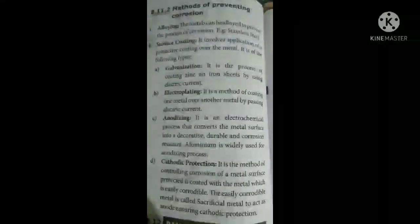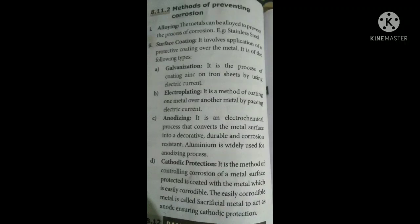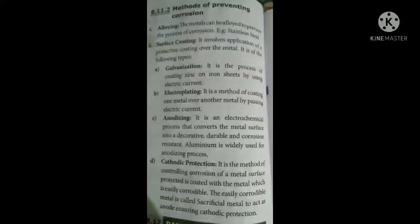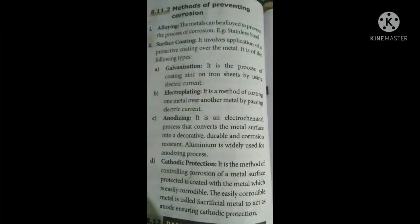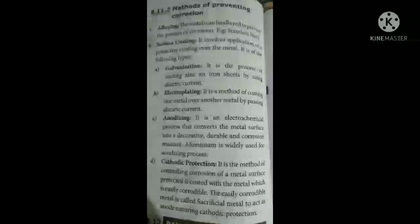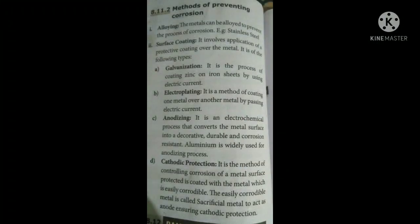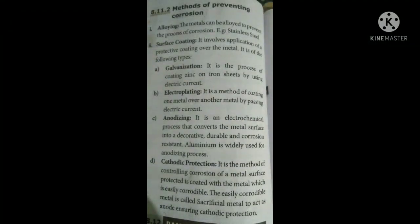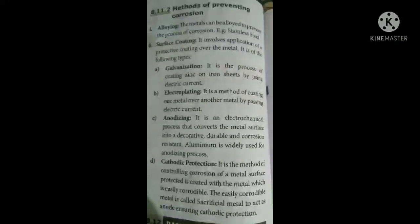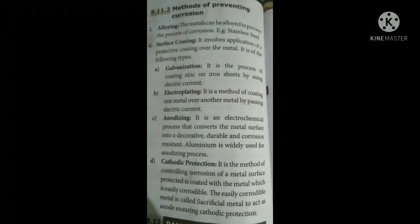The next technique is electroplating — covering one metal over another by passing electric current. For example, car parts are given a shiny appearance by electroplating. Next is anodizing — it is a chemical process where aluminium is widely used to give good attractive color and appearance to metals. Aluminium gives a shiny appearance, and with the help of electric current, aluminium is coated over the other metal.